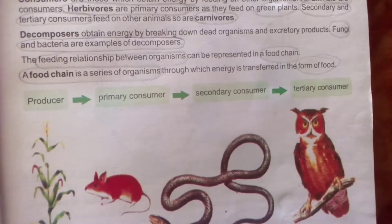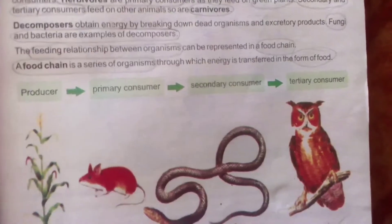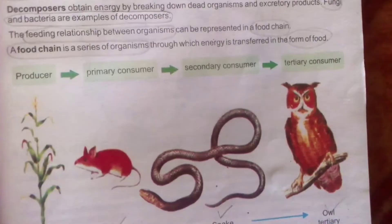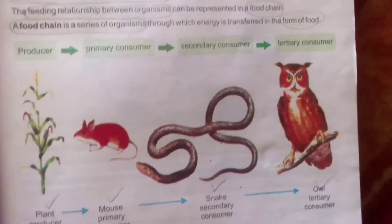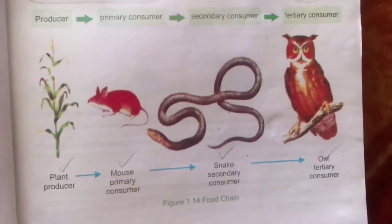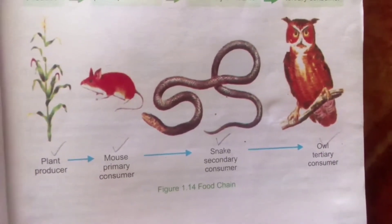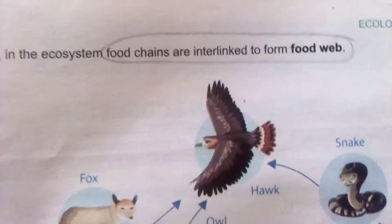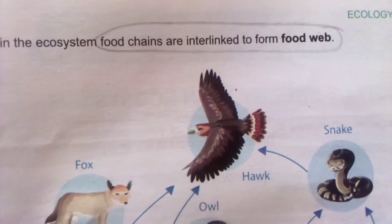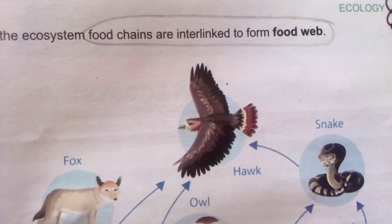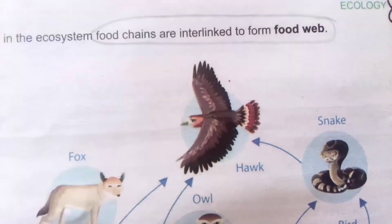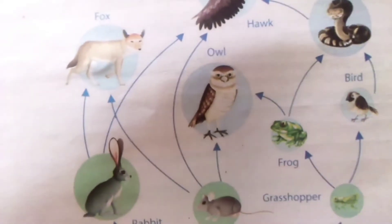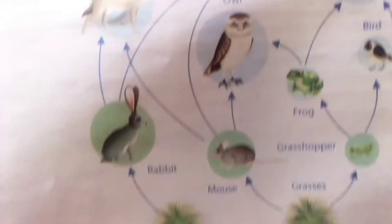The feeding relationship between organisms can be represented in a food chain. A food chain is a series of organisms through which energy is transferred in the form of food: producer → primary consumer → secondary consumer → tertiary consumer. Plant is the producer, mouse is the primary consumer, snake is the secondary consumer, and the eagle is the tertiary consumer. Food chains are interlinked to form a food web.